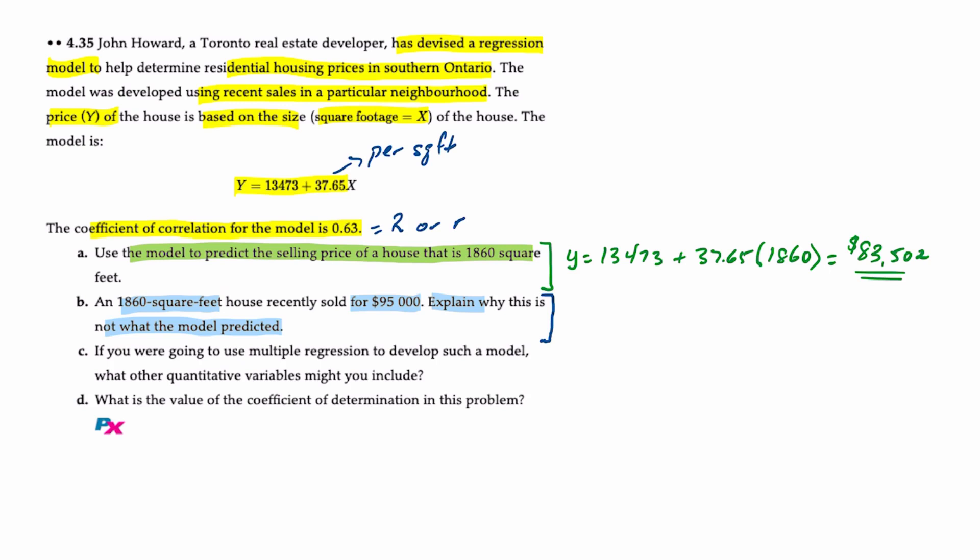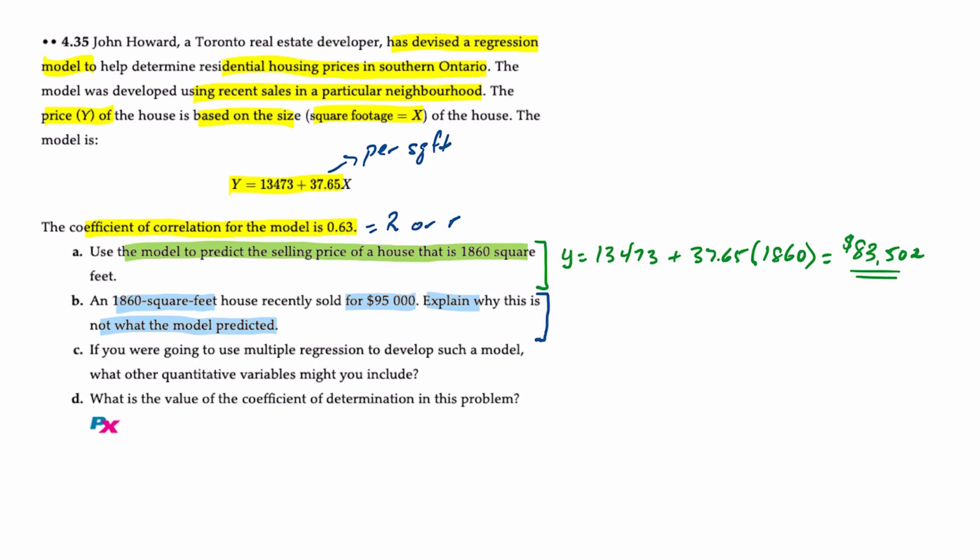Which takes us to requirement three, that says if you're going to use multiple regression to develop such a model, what other quantitative variables might you include? This is related to the discussion of why this house sold more than projected. There must be something else, perhaps such as number of bedrooms, does it have a den, number of bathrooms, does it have a finished basement, lot size, garage size, etc.